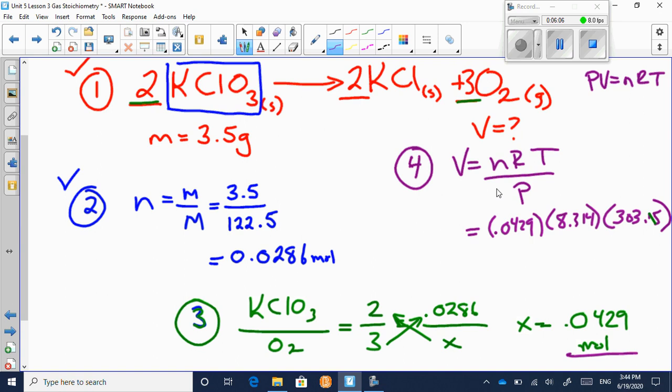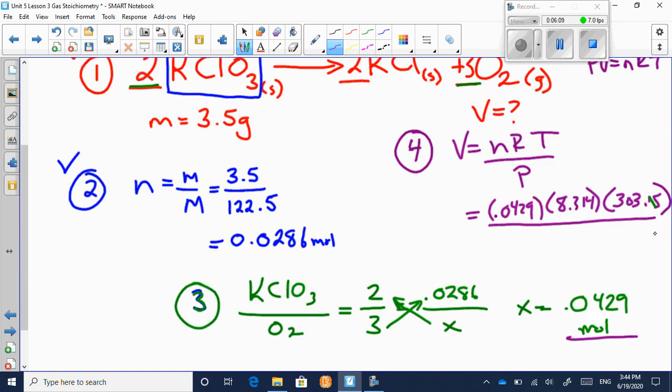And then we definitely use kPa. So I'll divide by the 100.5 kPa. And let's see what we get. 0.0429 times 8.314 times 303.15 divided by 100.5. And you get 1.075 or roughly 1.1 liters.